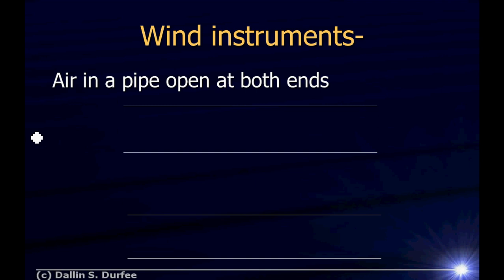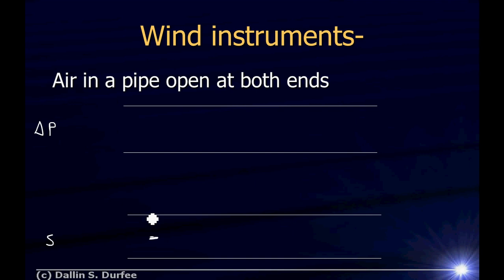When we do that, it turns out there are two different things we can think about. We can think in terms of the pressure oscillation or the displacement oscillation. As the air wiggles back and forth, we can think about how far a little packet of air is displaced from equilibrium, or we can think about how the pressure goes up and down as that wiggling happens.